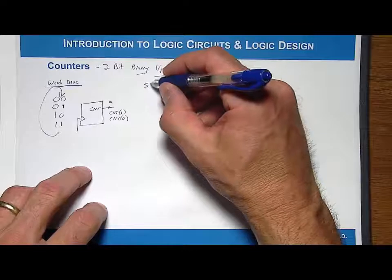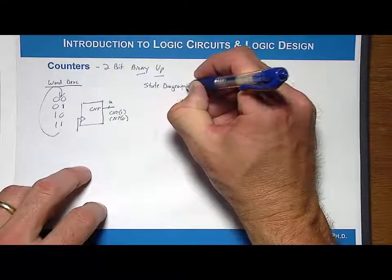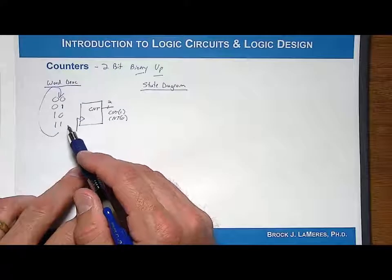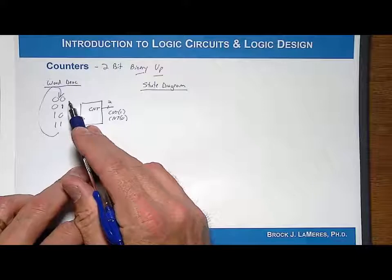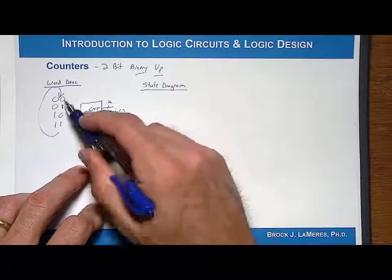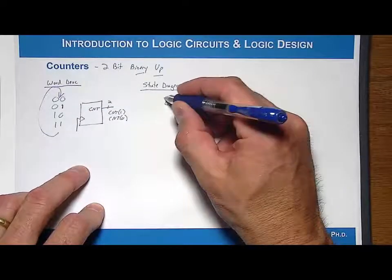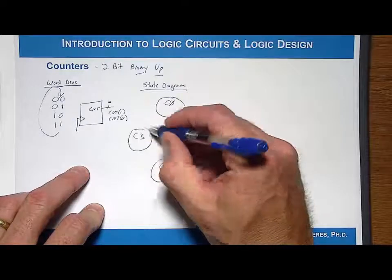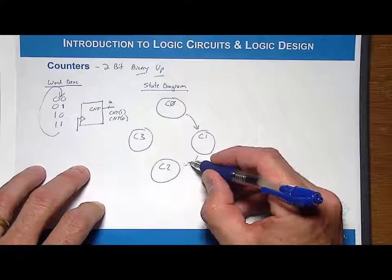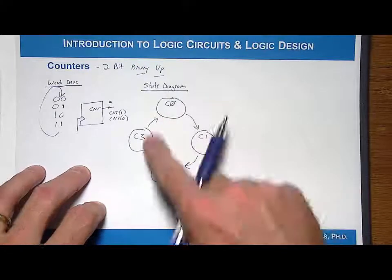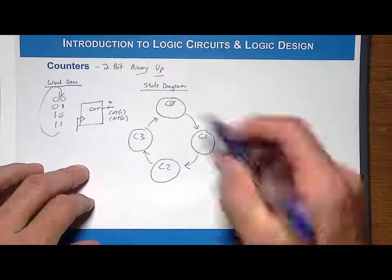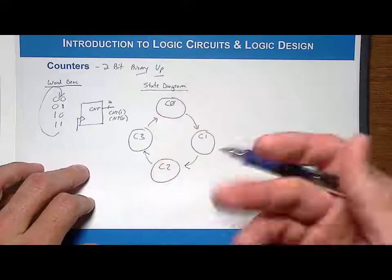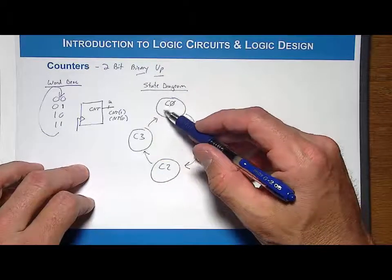Let's do the state diagram. The simplest way to do a counter is to have each state represent one of the count outputs, then create output logic that takes the current state and encodes it as the output. We'll have four states: C0 for count zero, then C1, C2, and C3. Every rising edge of the clock, we move over and traverse through the states linearly. This is the characteristic behavior of a counter — even a 32-bit counter traverses linearly through billions of states.